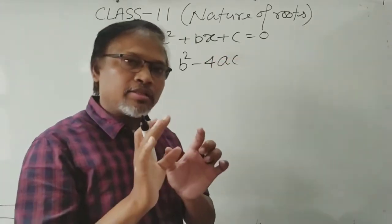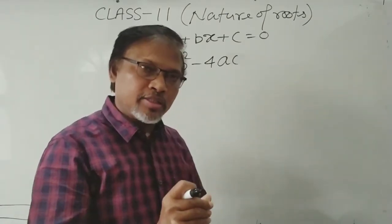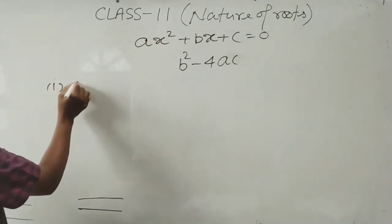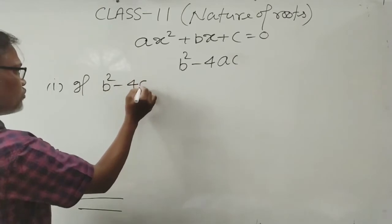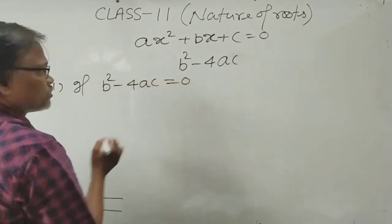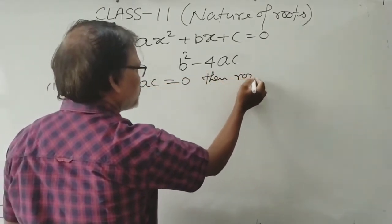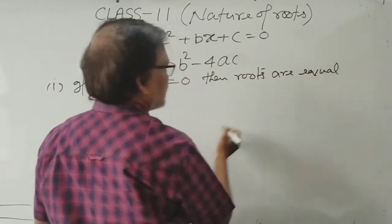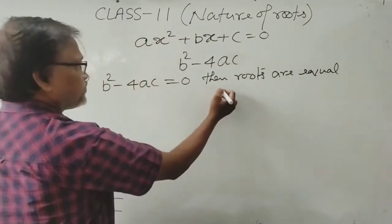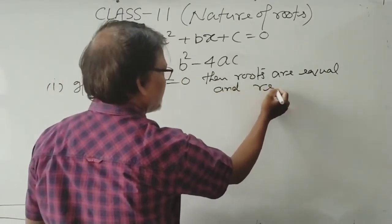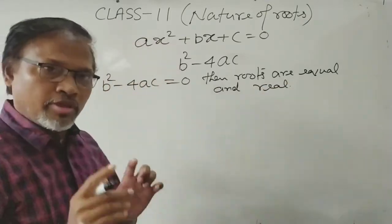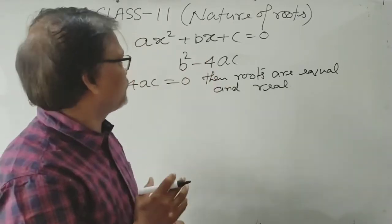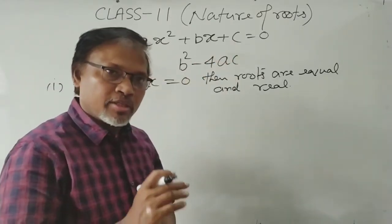There are three conditions. In class 10 you have read: condition 1 — if B² - 4AC = 0, then roots are equal and real. This you have read in class 10 about the roots and about this quadratic equation.